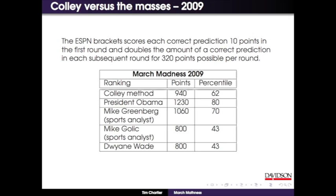When we did this in 2009, the Colley method, out of just over four million brackets, the ESPN challenge point system gives 10 points per correct win and doubles each round. We were in the 62nd percentile - we beat 62% of four million brackets. Barack Obama did quite well. Two sports analysts: one did a little bit better than us, one definitely did not. And Dwyane Wade did about as well as Mike Golic. So we were pretty pleased with that.